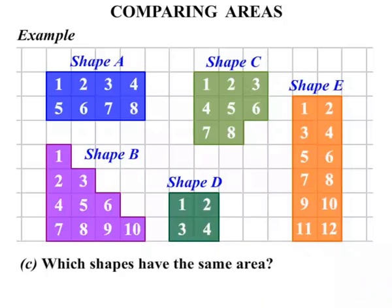Which shapes have the same area? Well we can see that Shape A and Shape C both have areas of 8 square units. So the answer, Shapes A and C.